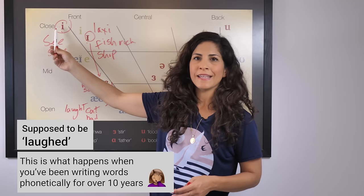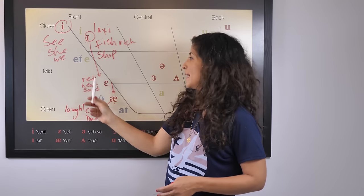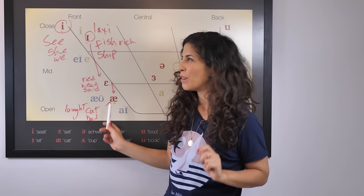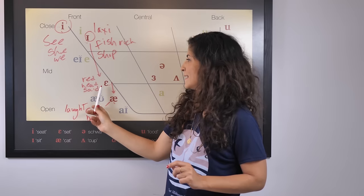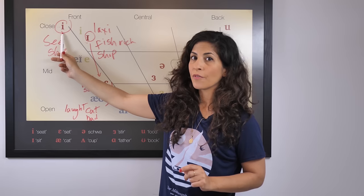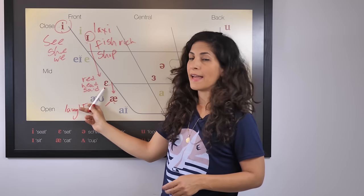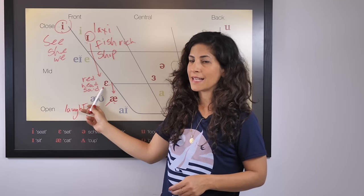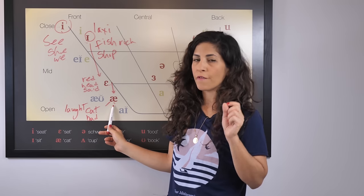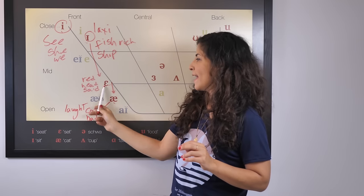So we have: the tense E as in 'seat,' the relaxed I as in 'sit,' the E as in 'set,' and the A as in 'sat.' Do it with me: seat, sit, set, sat. 'Bead' — tense E. 'Bid' — relaxed I. 'Bed' — that's the E sound. 'Bad.' These are the four pure vowels in the front of American English: E, I, E, A.